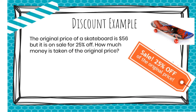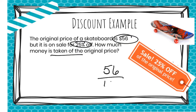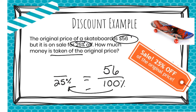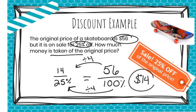Let's do a discount example. The original price of a skateboard is $56, but it is on sale for 25 percent off. How much money is taken off the original price? The $56 represents 100 percent, but we are wanting to find 25 percent. To get from 100 percent down to 25 percent, we divide by 4 — because 25, 50, 75, 100 is 4 steps. So 56 divided by 4 gives us 14, which means $14 is taken off the price.